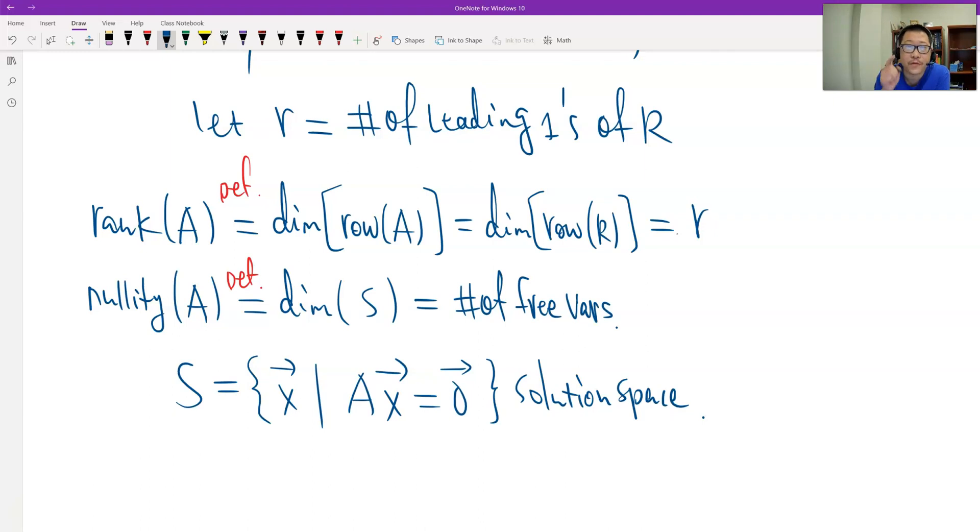What is the number of free variables? So the number of free variables plus the number of leading variables, which is the leading ones, equals the number of variables, which is the total columns. And now, can you get this result? Free variable is the total variable, which is n, the number of columns, minus the leading variable, which is the leading ones, r. So we find out what is the nullity, the nullity is just n minus r.